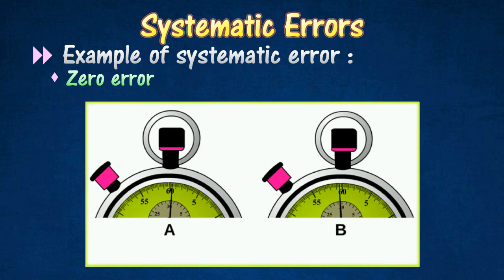Stopwatch A shows a zero error of plus 0.1 second. In order to compensate for the error, all readings taken with this stopwatch should be adjusted by deducting 0.1 second from the actual reading.